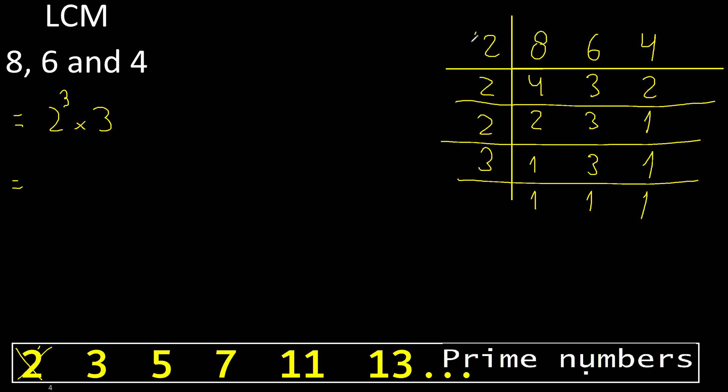Multiply: 2, multiply by 2 is 4, multiply by 2 is 8. 8 multiply by 3 is 24.